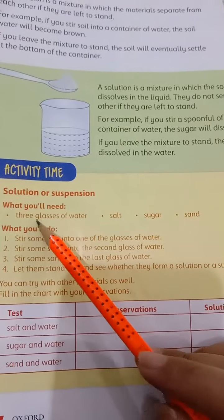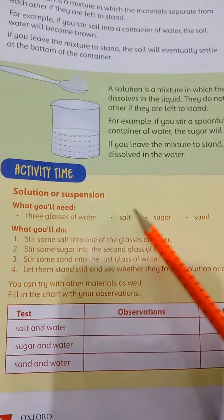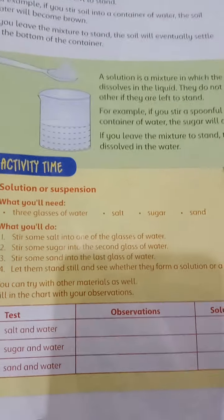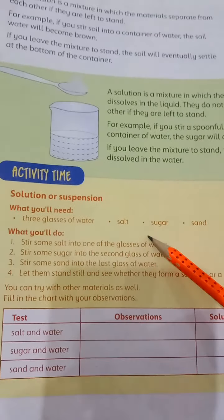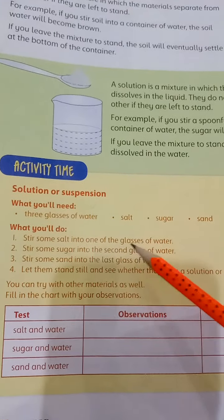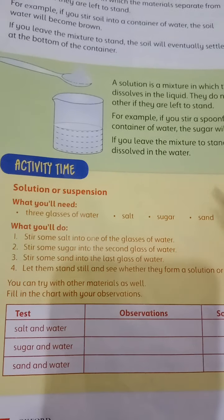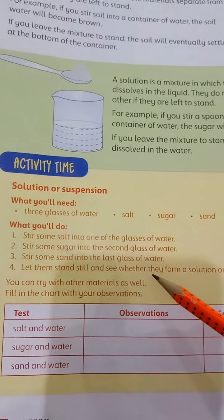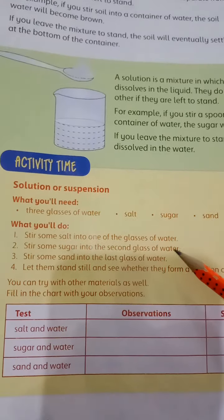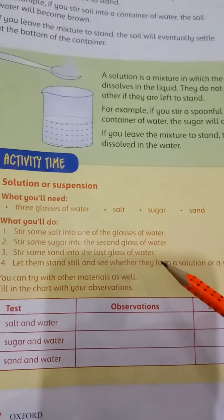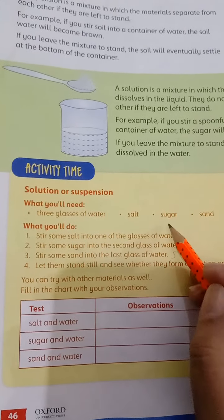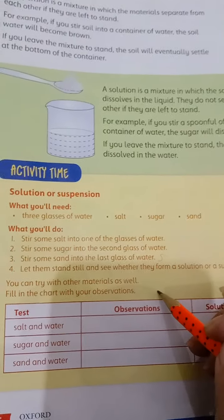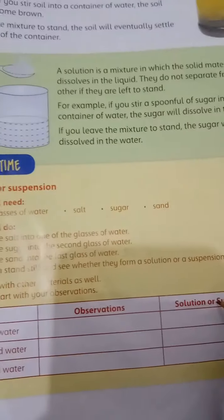For an activity, you will need three glasses of water, some salt, some sugar, and some sand. Stir some salt into the first glass of water, stir some sugar into the second glass of water, and stir some sand into the last glass of water. Let them stand still and observe whether they form a solution or a suspension. The sand will form a suspension, while the salt and sugar will each form a solution with water.